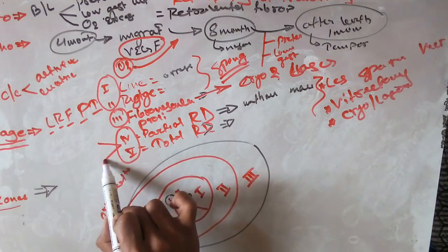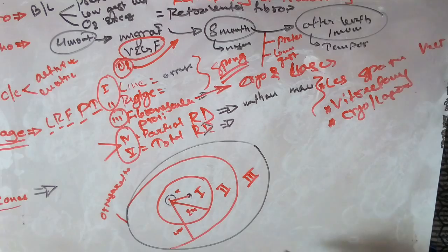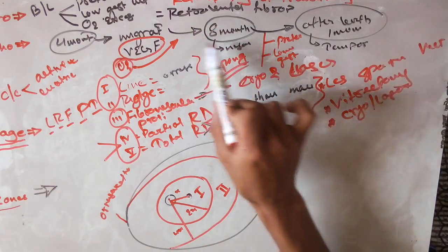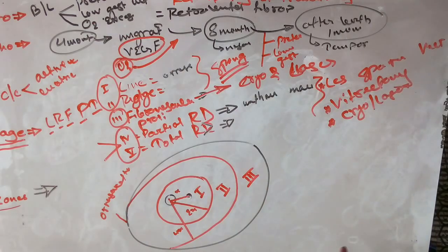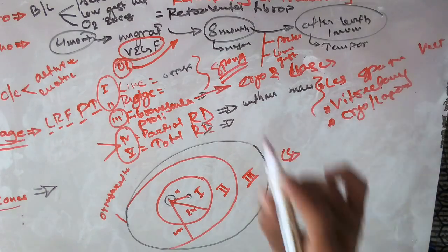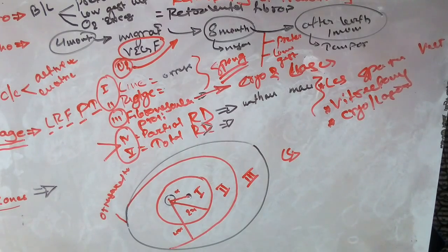For stages 4 and 5, lens-sparing vitrectomy or complete vitrectomy is done along with cryo and laser therapy. Any child born with low gestational weight or as a preterm baby should be screened regularly for retrolental fibroplasia or retinopathy of prematurity. This was all for ROP.